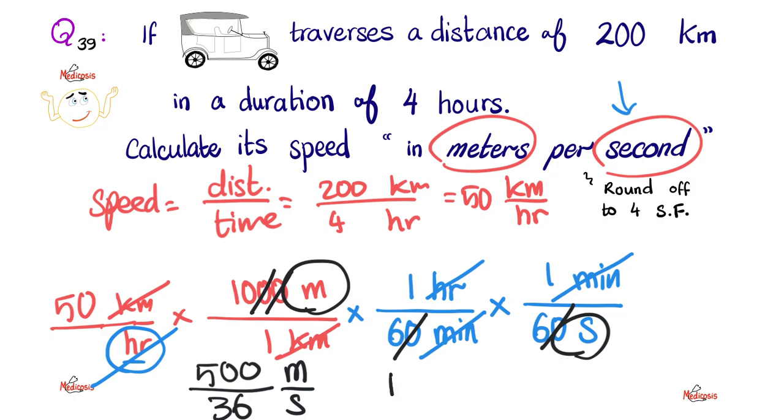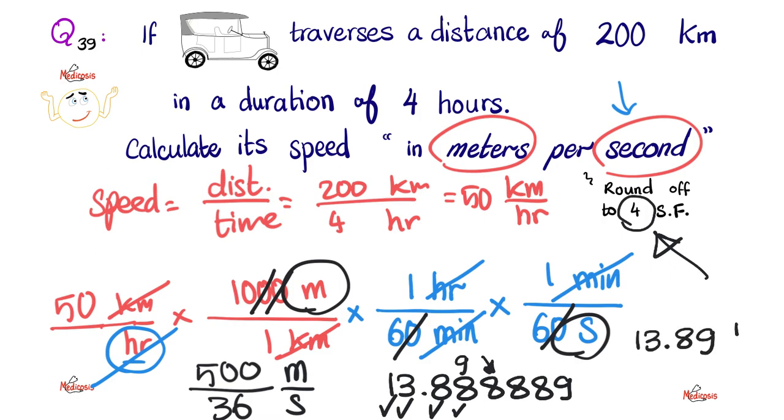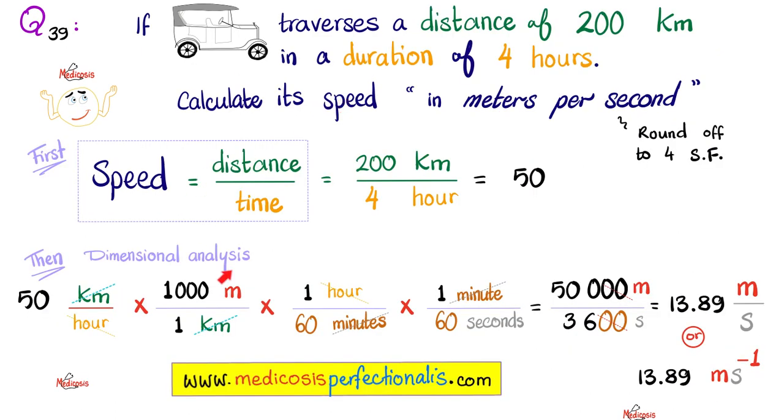500 over 36 is 13.888888, whatever, nine. But we want just four significant figures. So here's one, here's two, here's three, here is four. But since it's followed by an eight, which is five and up, this eight has to be rounded into a nine. So the final answer is 13.89 meters per second. You can also write this as 13.89 meters times second power negative one, because I raised the second from the denominator into the numerator. And there you go.